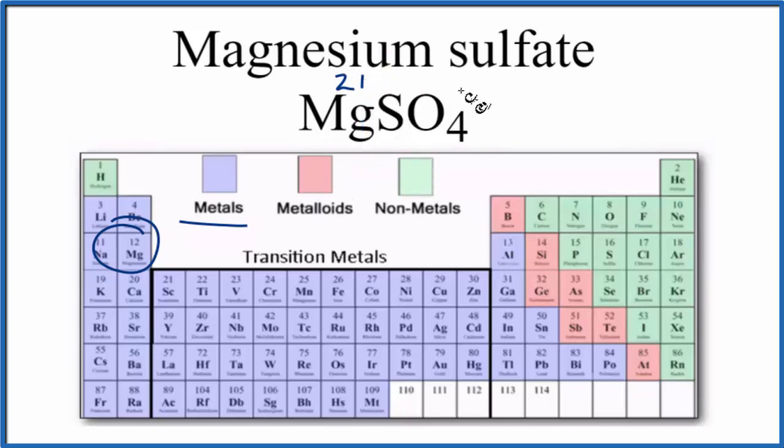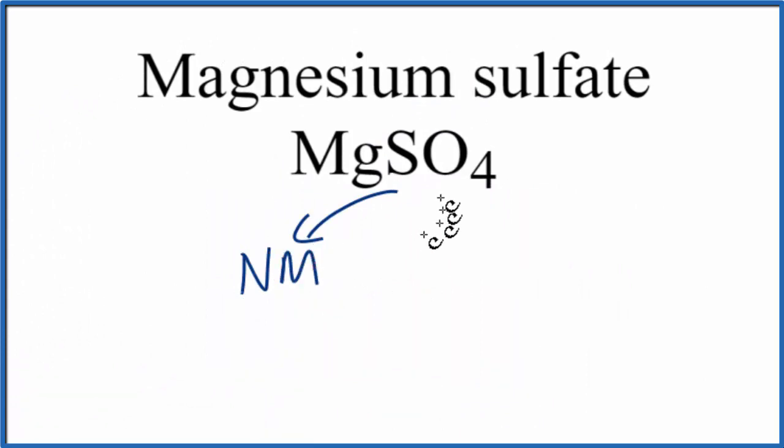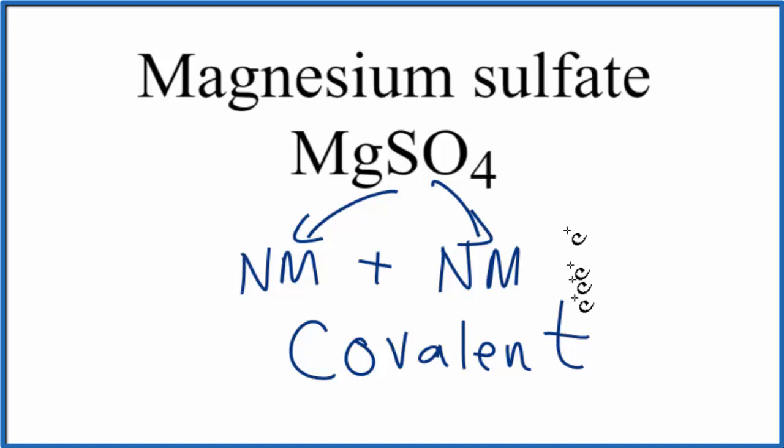Let's talk about the sulfate ion for just a moment. Sulfur is a nonmetal, and oxygen is also a nonmetal. We have a nonmetal plus a nonmetal, that gives us a covalent bond. It's also called a molecular bond. So the bonds between the sulfur and the oxygen atoms are going to be covalent bonds.